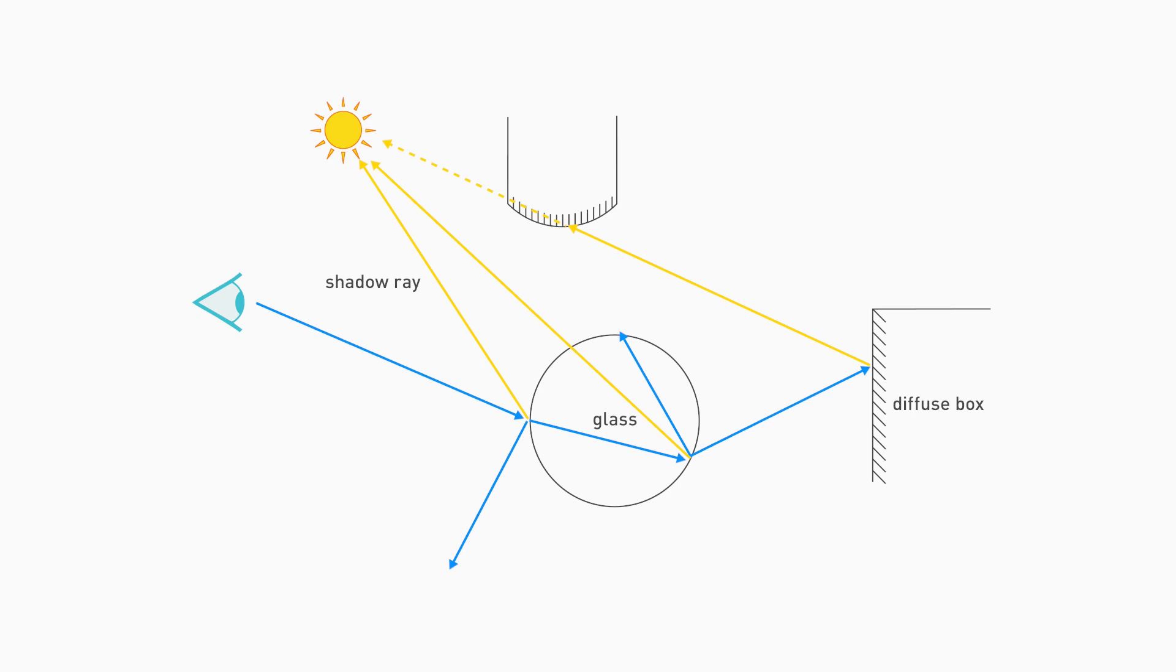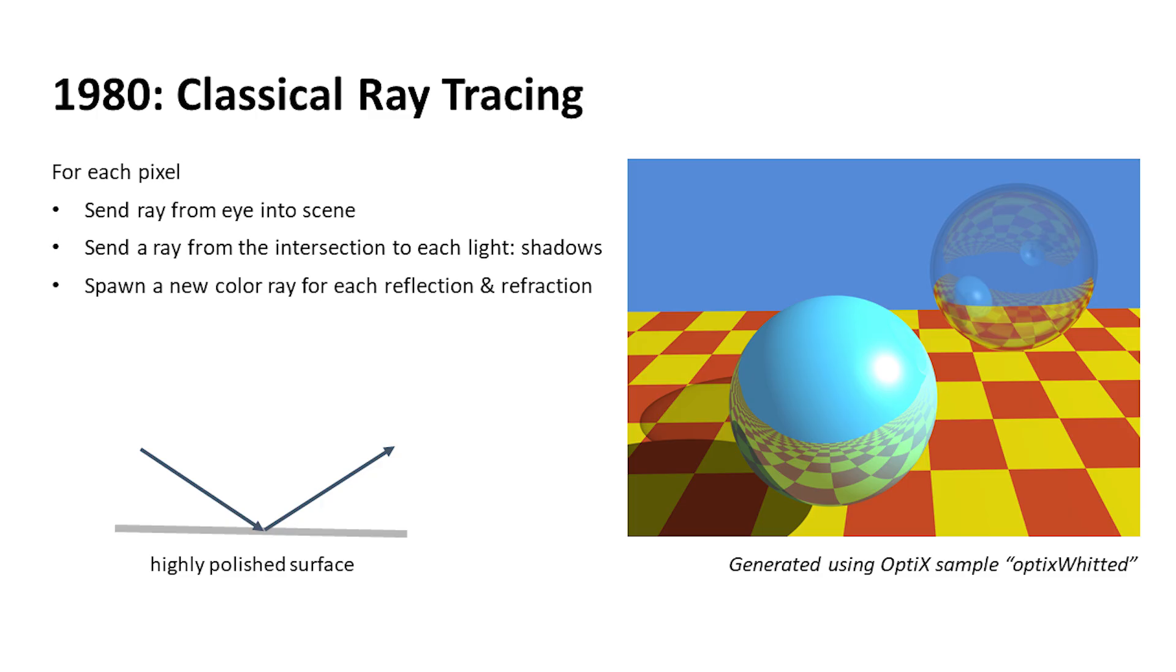With that, we now take all those contributions, all those intersection points—the two on the glass and the one on the box—and we add them all up, and we get a color at the eye, a color for the pixel. So that's Whitted-style ray tracing.